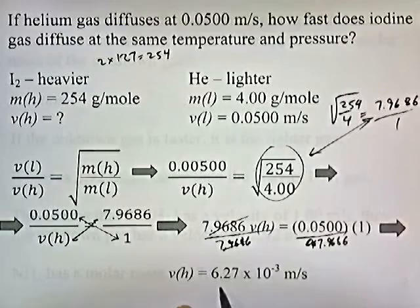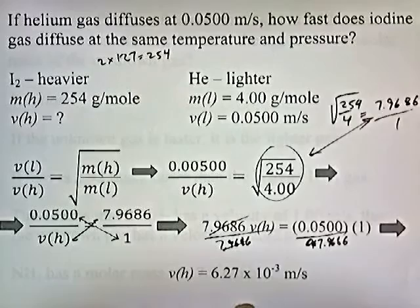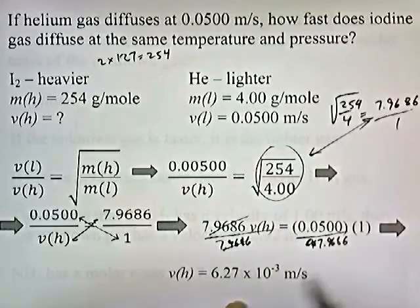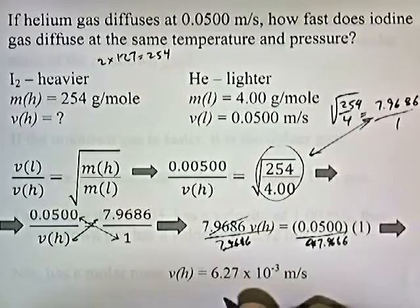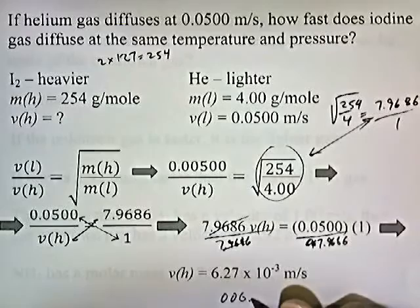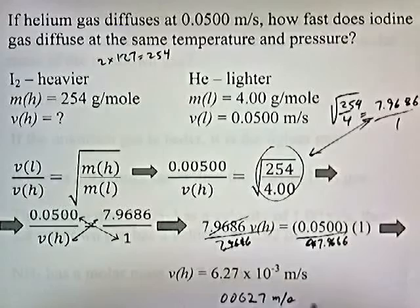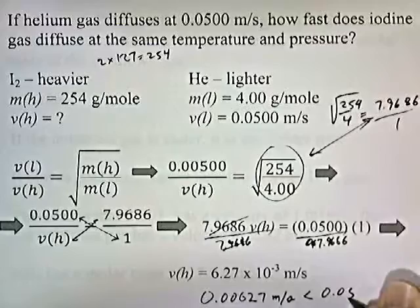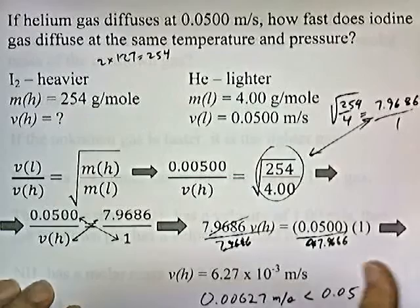And the answer is 6.27 times 10 to the negative third meters per second. So, what this answer means is that if helium diffuses at that speed, that means the heavier one diffuses at this slower speed. So, this is 0.00627 meters per second. That makes sense. This number is smaller than 0.05. So, the heavier one goes slower than the lighter one. Let's try one more.